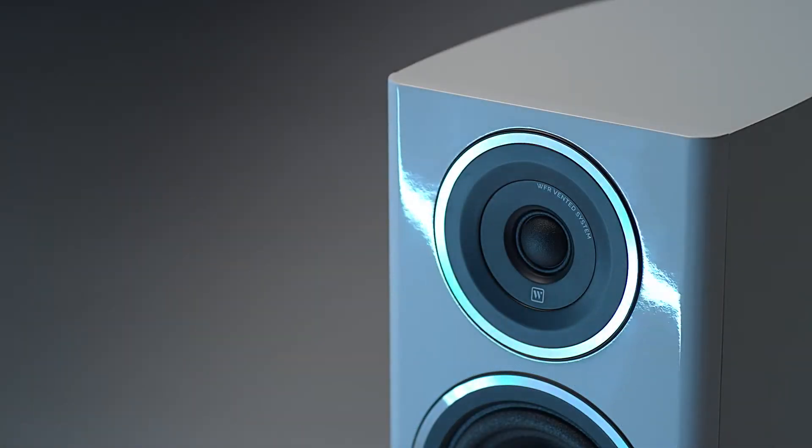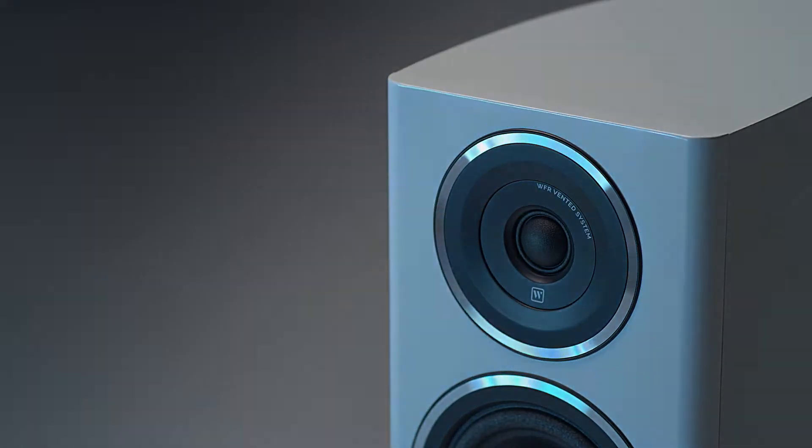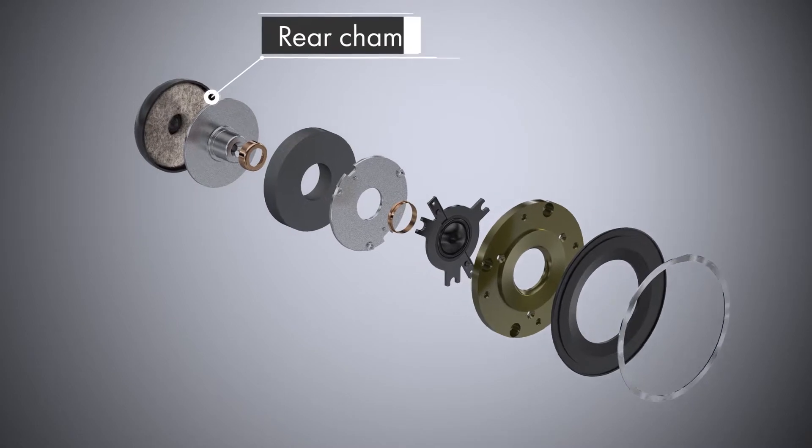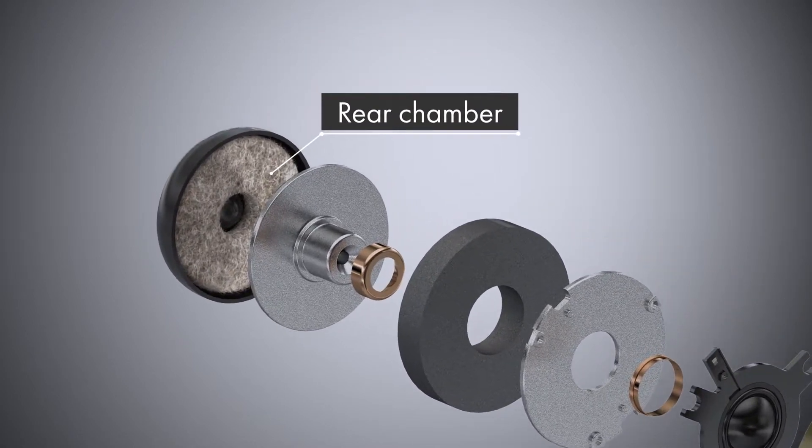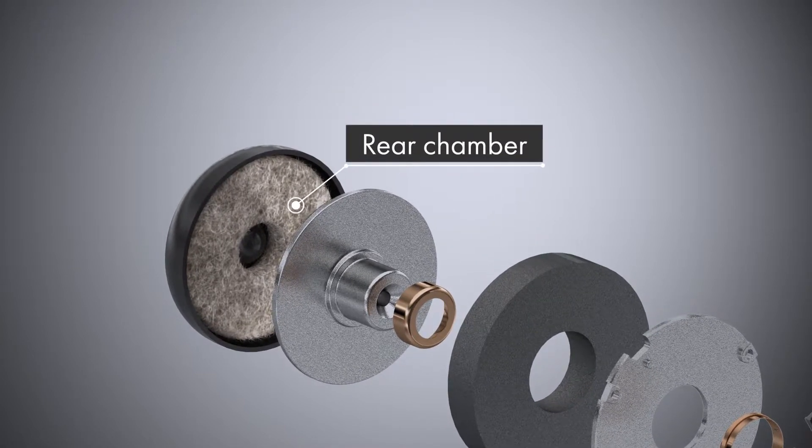The treble unit even has its own cabinet, a specially shaped rear chamber damped with fiber filling. This provides a low resonant frequency, below 800 Hz, and that ensures that the usual distortion heard from such resonance is buried deep below the musical output.